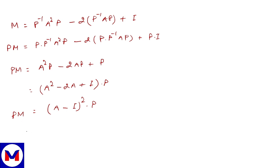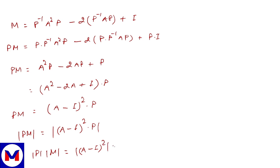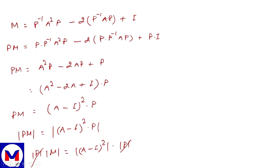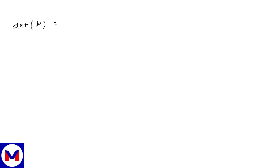Now we take the determinant of PM. Determinant of PM equals determinant of (A - I) whole squared into P. Taking determinants: det(P) · det(M) equals det((A - I)²) · det(P). In matrices we couldn't cancel directly because of left and right sides, but in determinants we can. Therefore, det(M) equals det(A - I) whole squared.